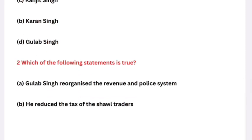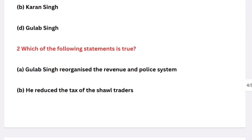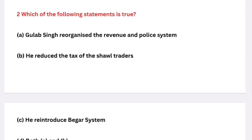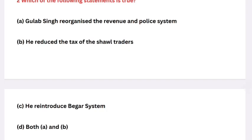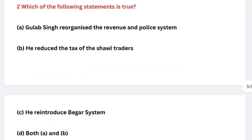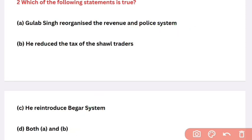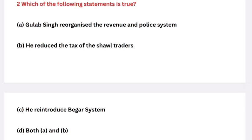Question: Which of the following statements is true? Statement A: Gulab Singh reorganized the revenue and police system. Statement B: He reduced the tax on shawl traders. Statement C: He reintroduced the bhaiqar system (forced labor). The right answer is both A and B are correct — and actually all three statements should be evaluated. He reorganized revenue and police, reduced taxes on shawls, and reformed (not reintroduced) the bhaiqar system. So A, B, and C are all correct.